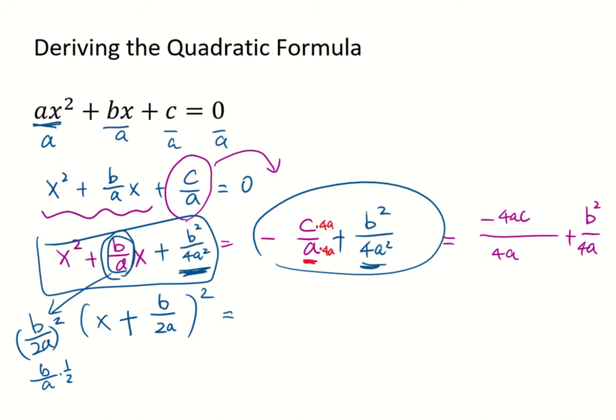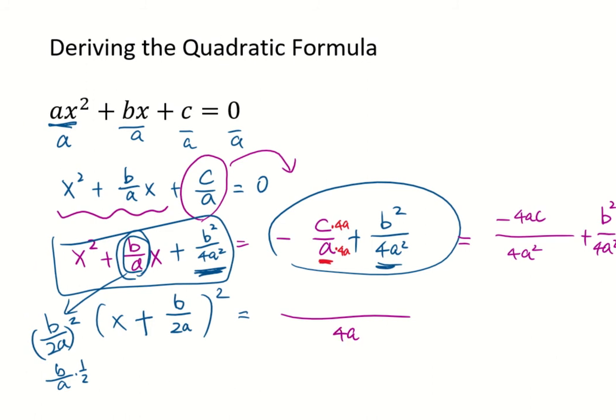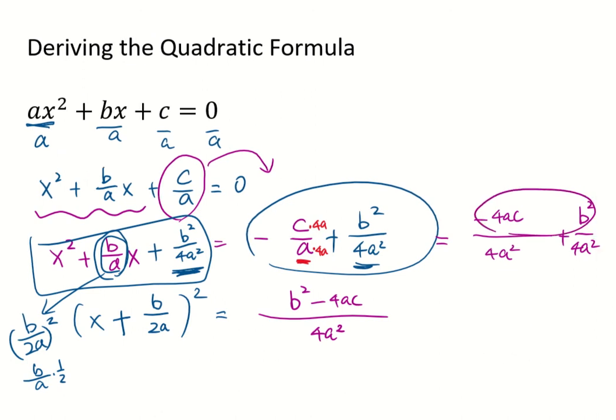Okay, so now we can add the common denominator. Sorry, it's 4a squared. The common denominator is 4a squared. On top I can write it as b squared minus 4ac if you add up the two numerators.